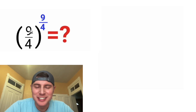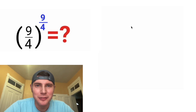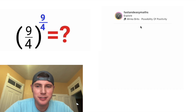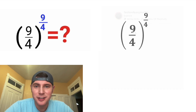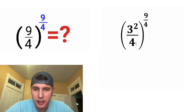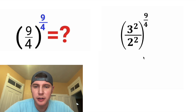Hey guys, this looks like a fun one. It's 9 fourths to the power of 9 fourths. This was posted by Fast and Easy Maths, so let's see how fast and easy it is. First, I'm thinking let's rewrite the 9 as 3 squared and the 4 as 2 squared.